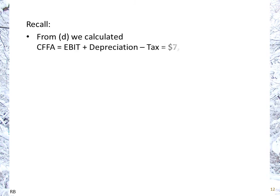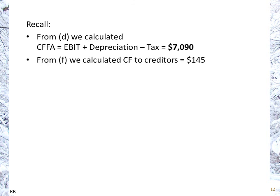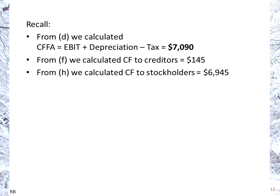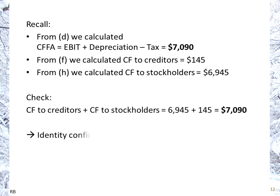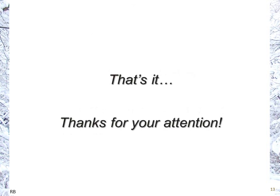We've answered all the questions. To recap: from part D, cash flow from assets was $7,090. From part F, cash flow to creditors was $145. From part H, cash flow to stockholders was $6,945. Adding creditors and stockholders: $145 plus $6,945 equals $7,090 — confirming the identity that cash flow from assets equals cash flow to creditors plus cash flow to stockholders. That's it, thanks for your attention.